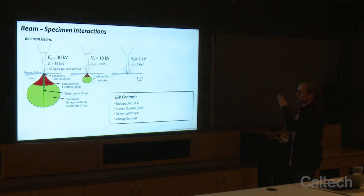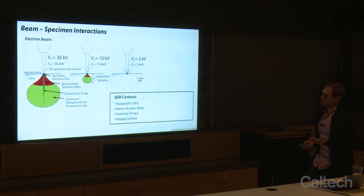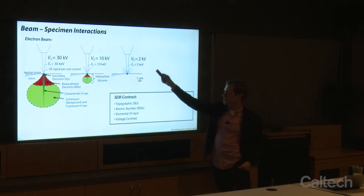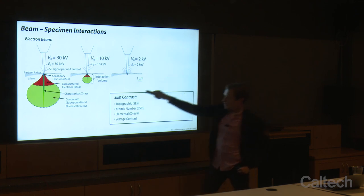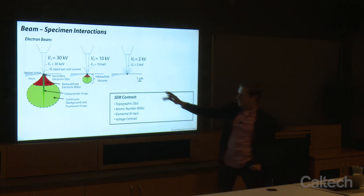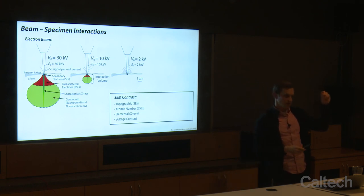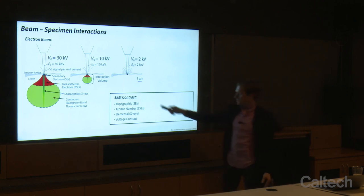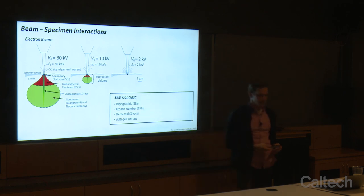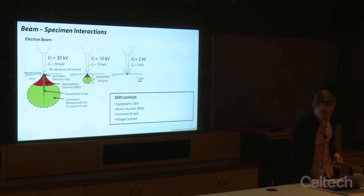Drawing analogies to electron beams: for SEM beam-specimen interactions at 30 kV, the interaction volume is about 8 microns deep in silicon. In SEM we see topographic contrast from secondary electrons at the top, backscattered electrons, and characteristic x-rays — giving us topographic, atomic number, and elemental contrast, plus some voltage contrast. In a helium ion beam at 30 kV, our interaction volume is about 500 nanometers — orders of magnitude smaller. The signal generated is also order of magnitude greater than with an electron beam, so with much smaller probe current we can get just as much signal as from SEM.